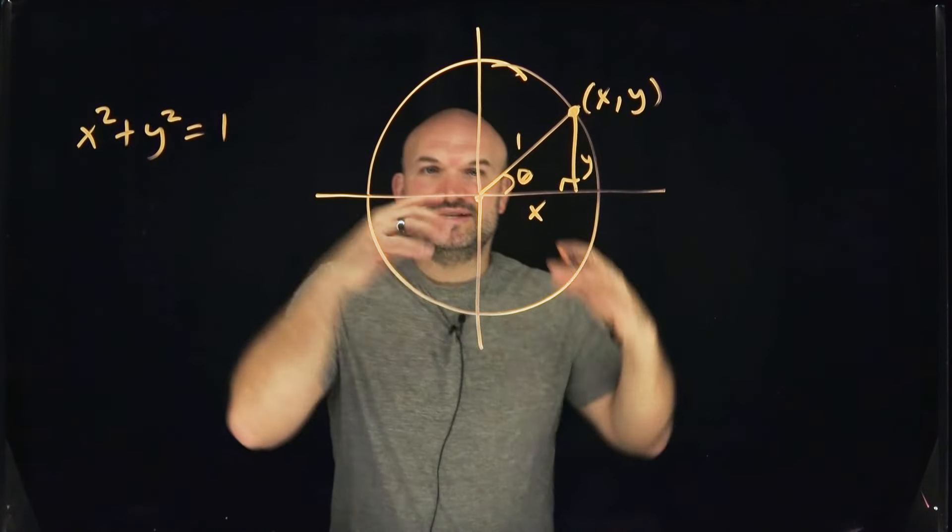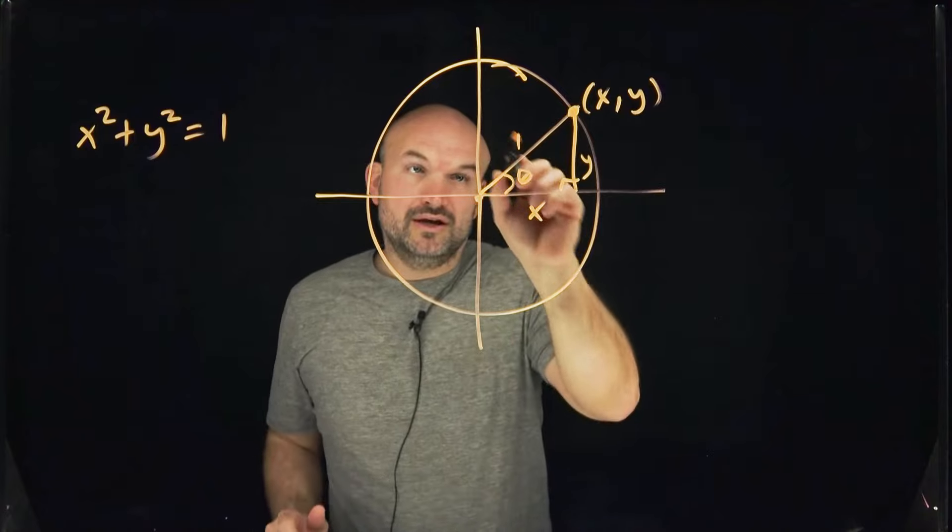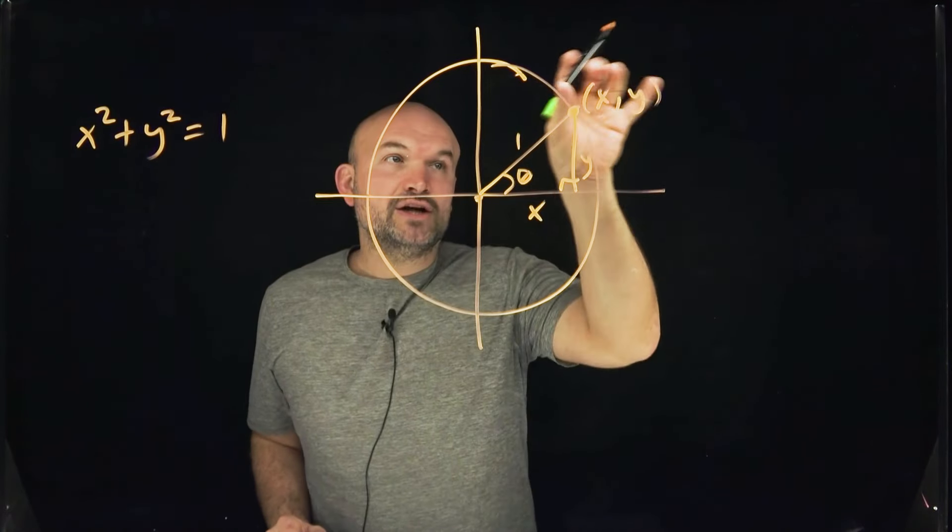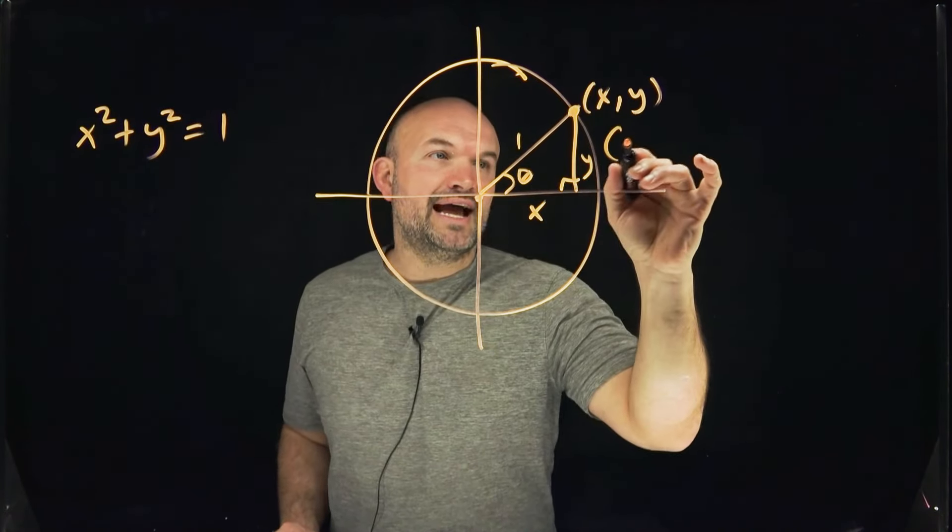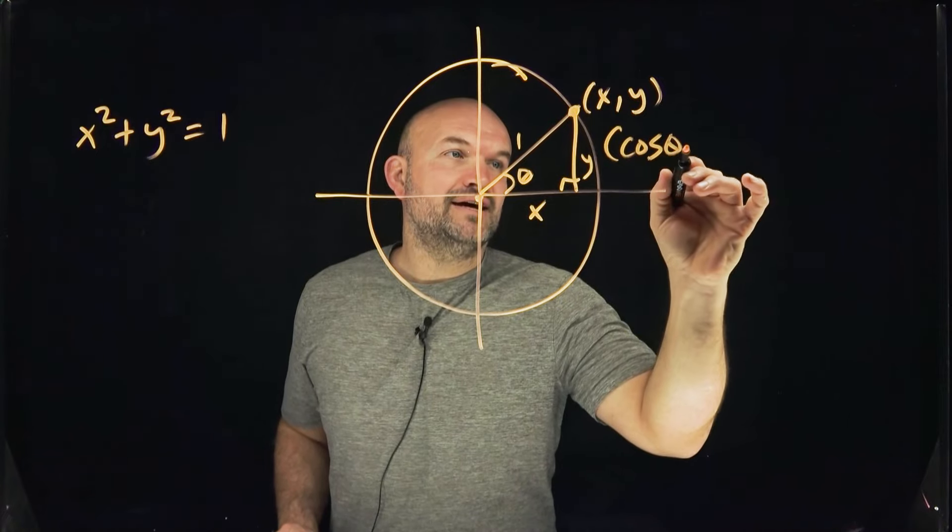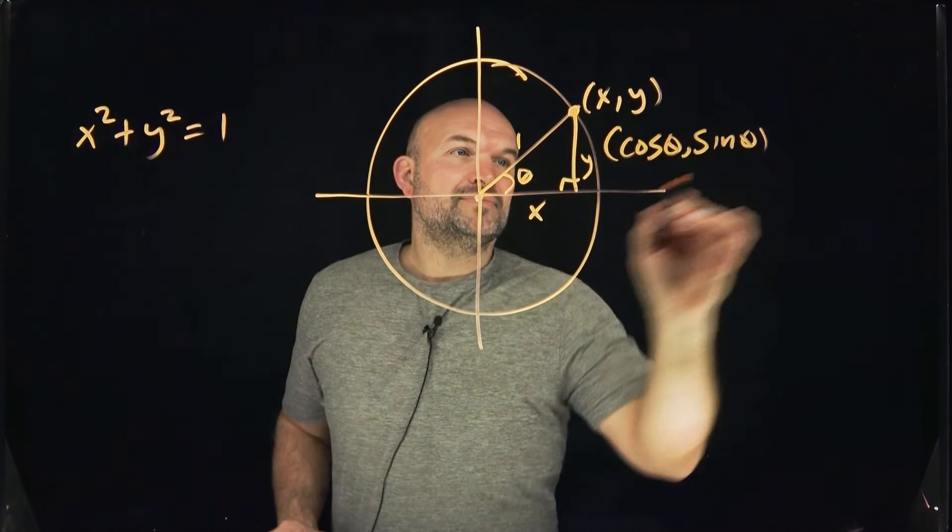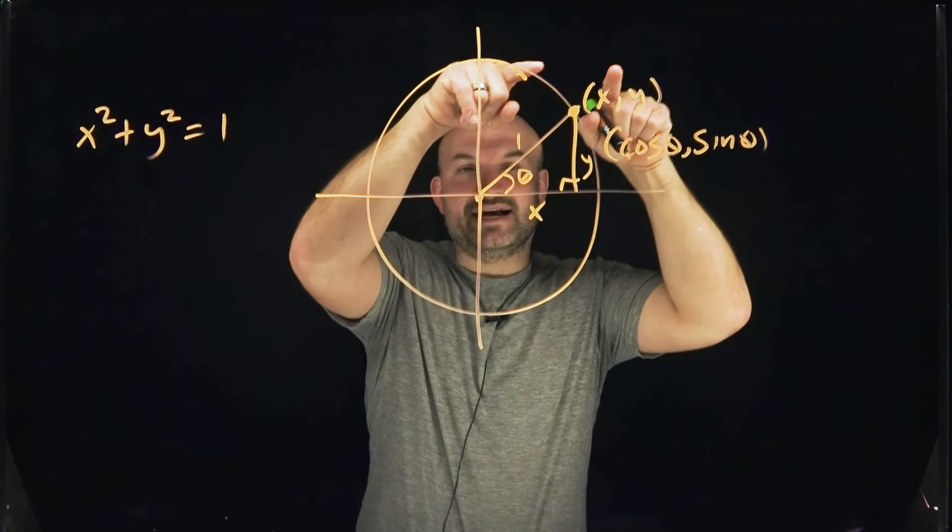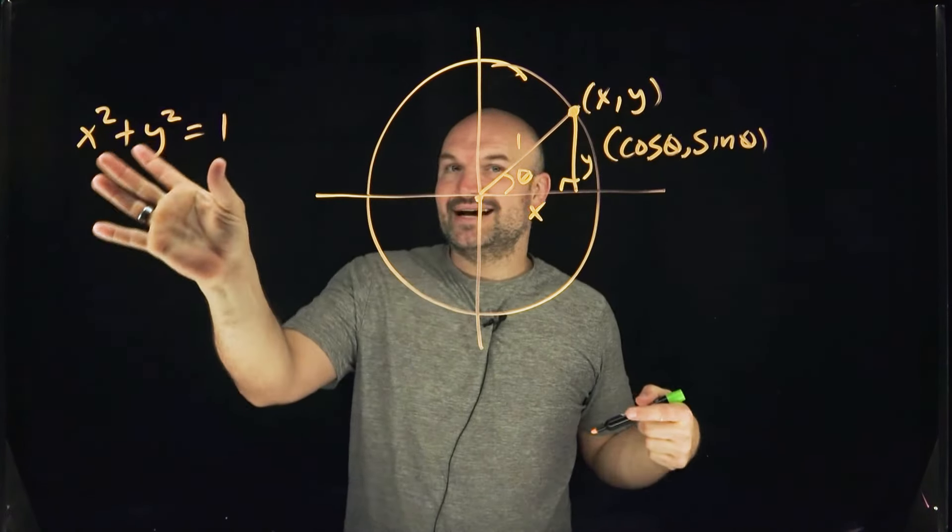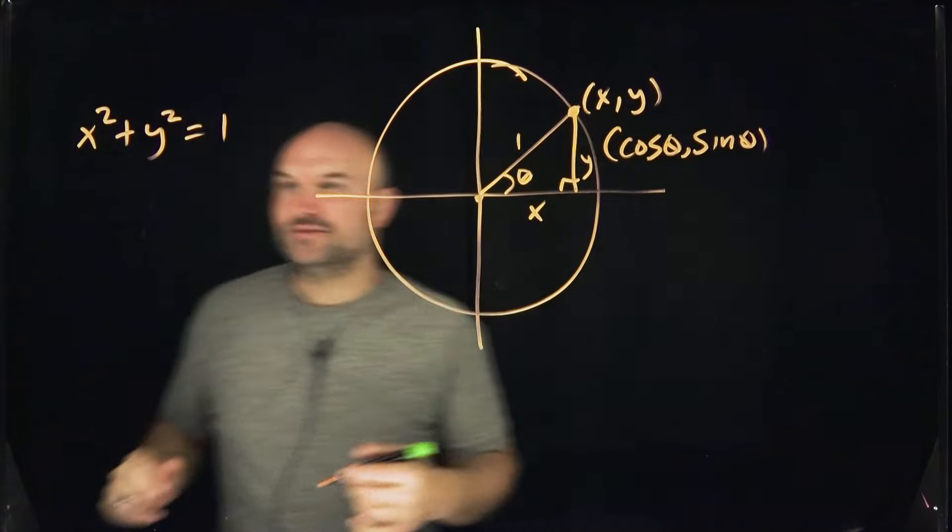But also one thing we talk about when we're dealing with points that are on the unit circle, when this radius is one, we can also represent this coordinate point as cosine of theta, sine of theta. So by replacing my sine and my cosine with Y and X, I now get my first Pythagorean relationship.